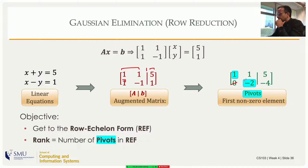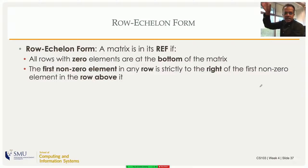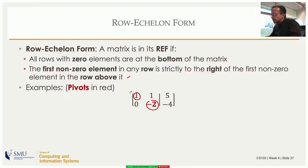The first non-zero element remaining in each row is called the pivot, and this form is called the row echelon form (REF). The rank of a matrix is the number of pivots. Here we have two pivots, so the rank is two. The conditions for REF are: all zero rows must be at the bottom, and the first non-zero element in any row must be strictly to the right of the first non-zero element in the row above it — like steps or stairs ('échelon' in French).